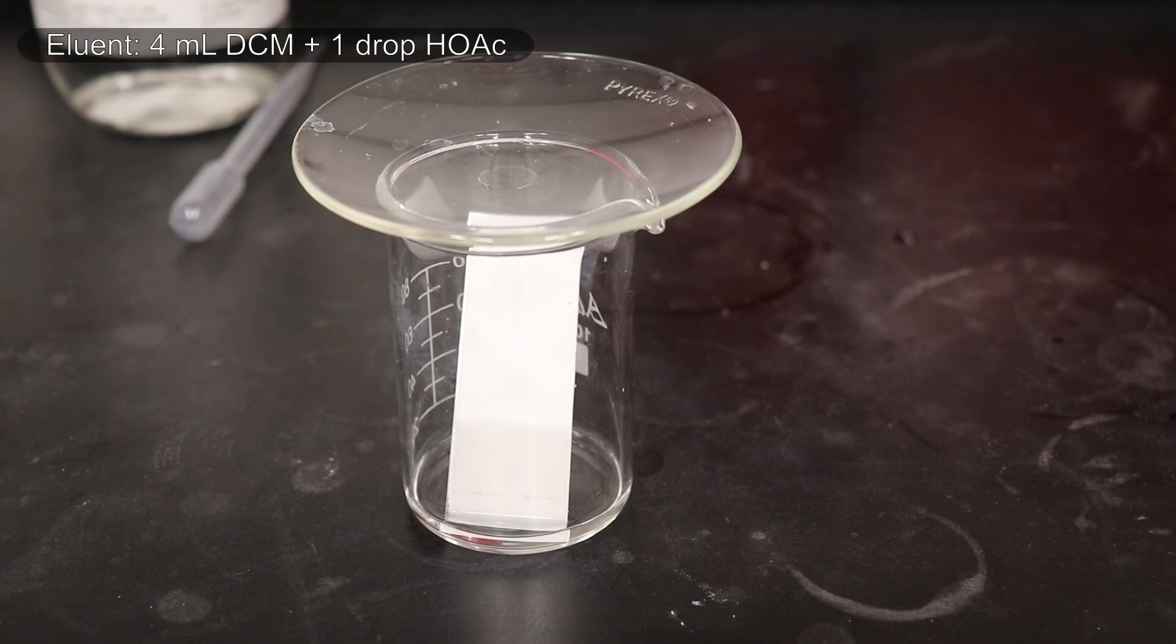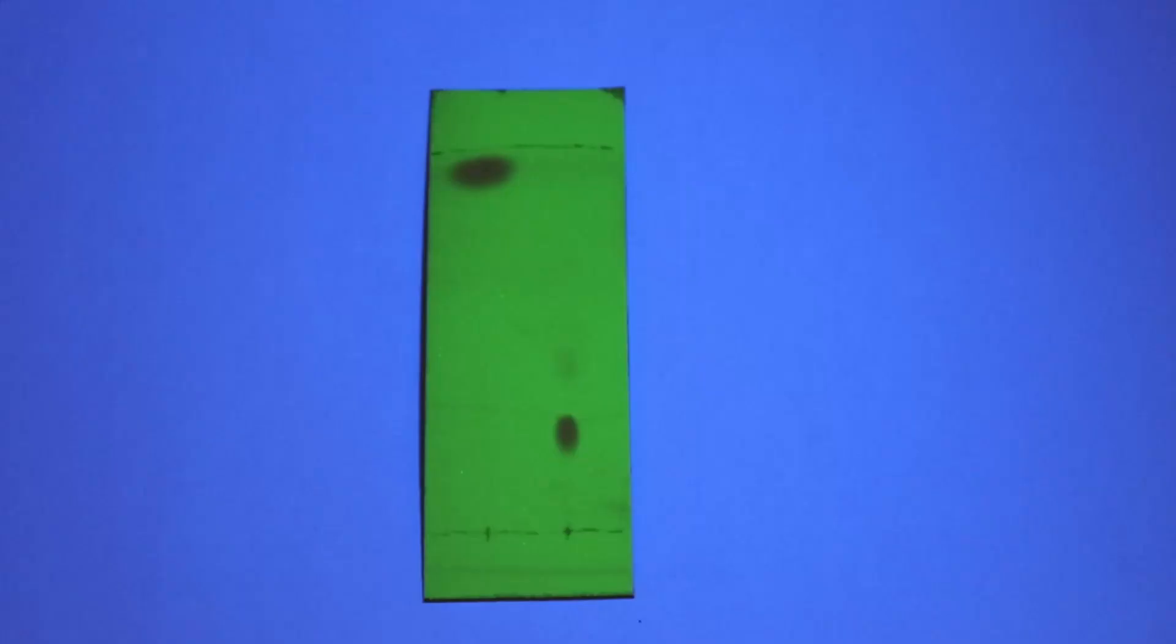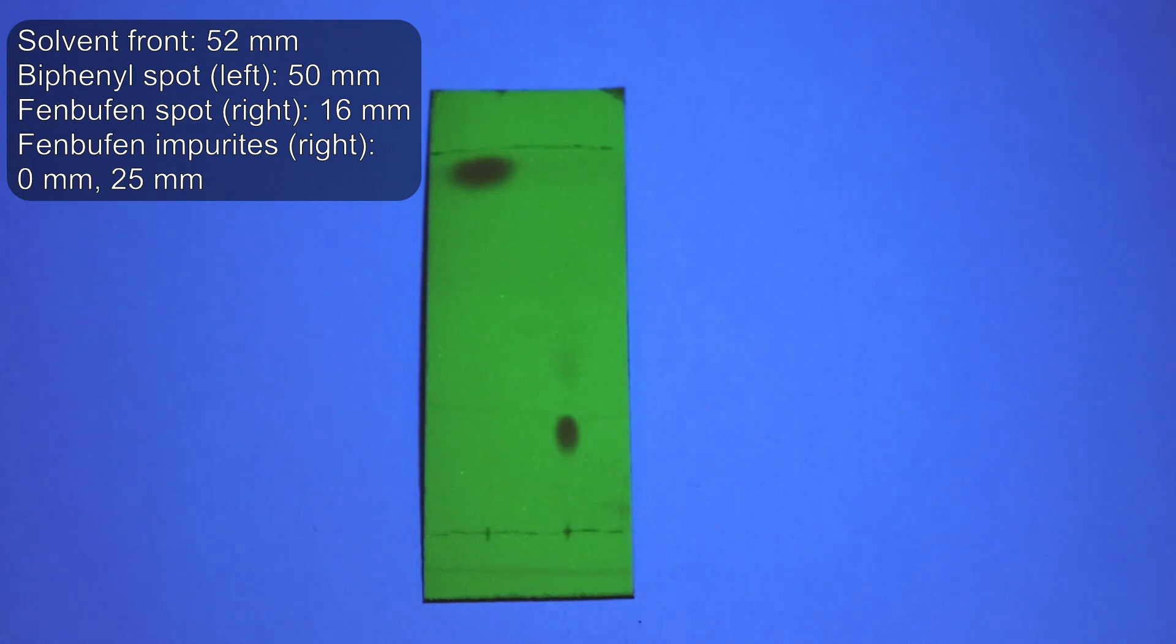So the next thing I did was run a TLC to try and see if I could find any impurities in the sample. As an eluent, I used DCM with a single drop of glacial acetic acid added. The left lane contains the starting biphenyl and the right lane contains the fenbufin, though unfortunately I did not have a sample of pure fenbufin to make a reference spot.